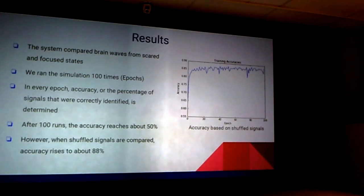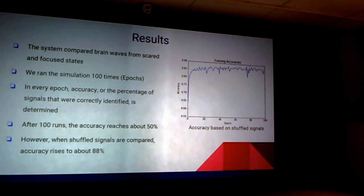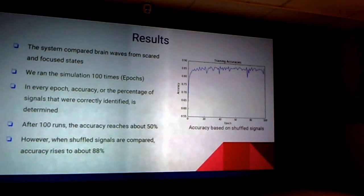After processing the data and running the network 100 times, we found that the accuracy with four signals was almost random — about 50%. We later realized that when we were first running the simulation, the signals were out of order, which was giving us a faulty accuracy of about 88%.